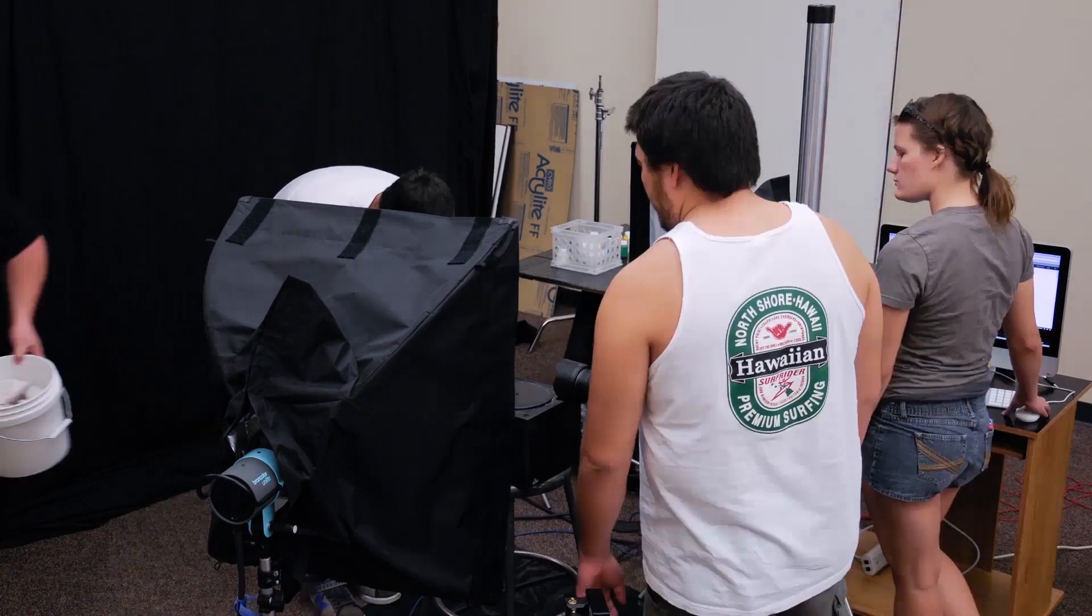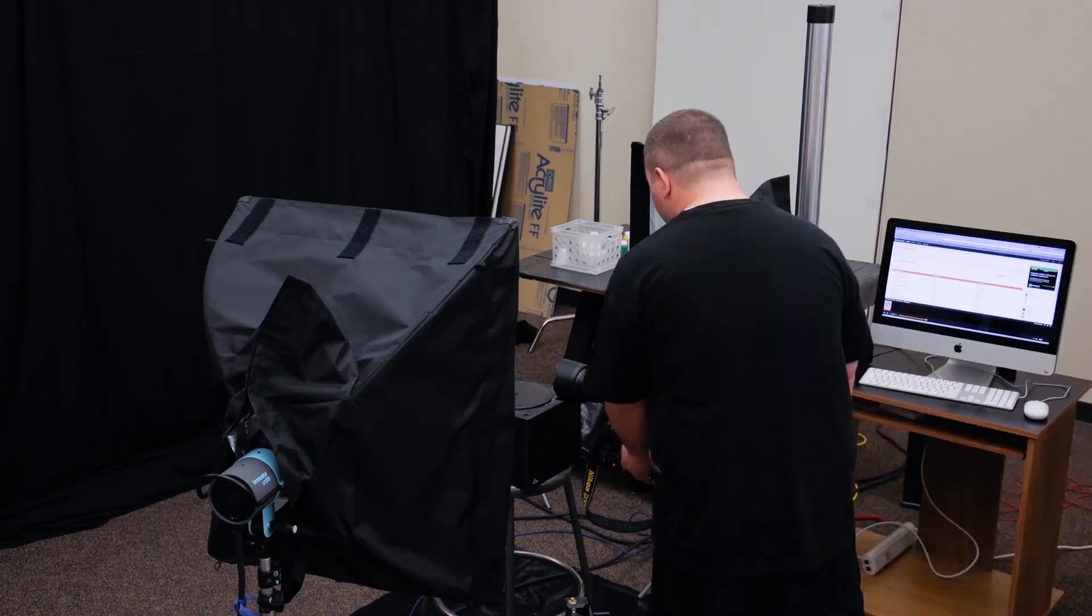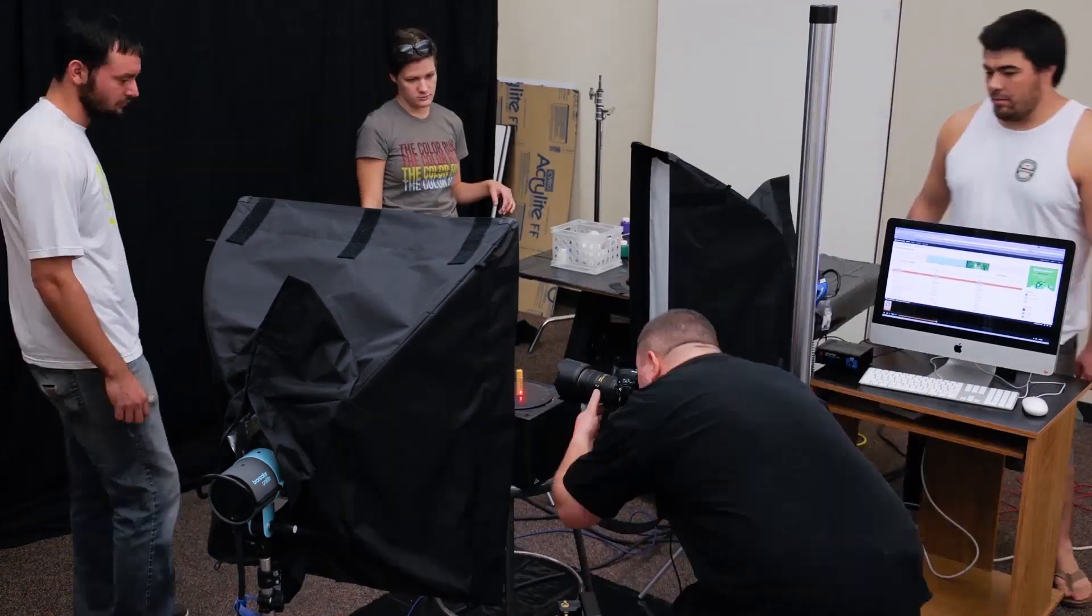The trick with this kind of photography is not a fast shutter speed, it's a fast and precise flash. The camera is on bulb and you can see that the room is completely dark when we're doing the shooting.